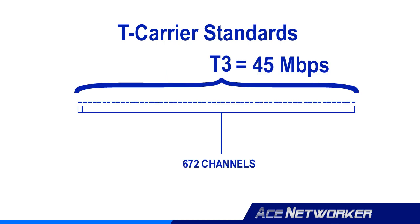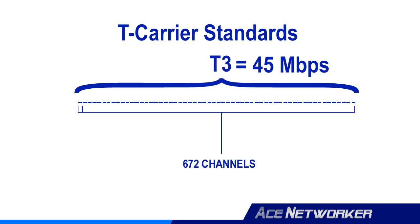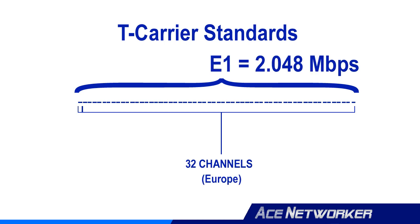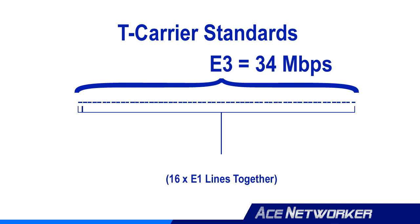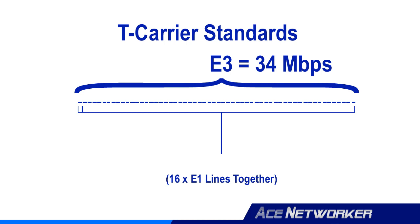A T3 line supported a connection speed of about 45 megabits per second on a dedicated line and consists of 672 individual DS0 channels. T3s are typically used by regional telephone companies and ISPs for actually connecting to the internet. E1 is the European digital transmission line, carrying a signal at 2.048 megabits per second — that's 32 channels times 64 kilobits per second. E3 lines are made up of 16 E1 lines for a total speed of approximately 34 megabits per second. Make sure you know these four T-carriers and the basic breakdown of their frames and speeds.